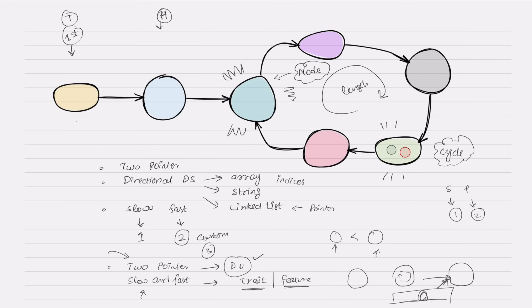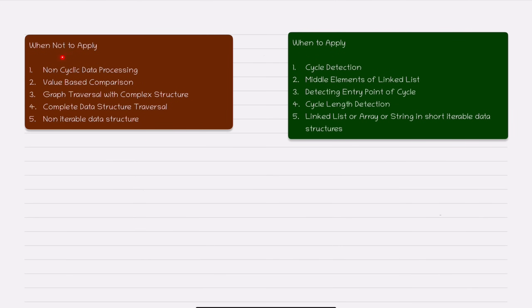That is how the slow and fast pointer works. Now let's see how to identify when this coding pattern can be applied to a particular question — what types of things, when detected in a question, indicate you can apply it, and when you should not.